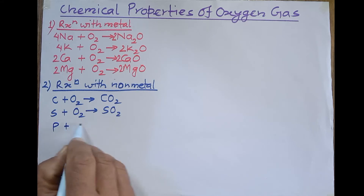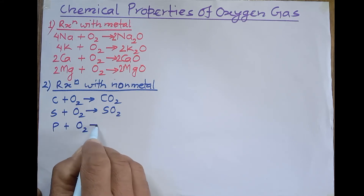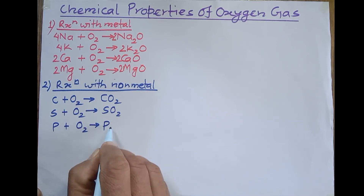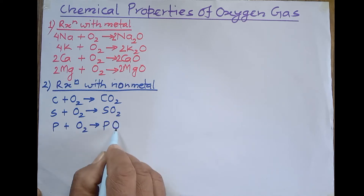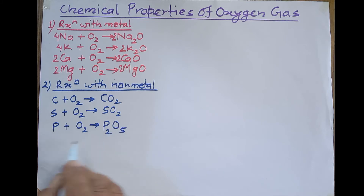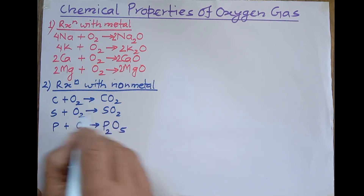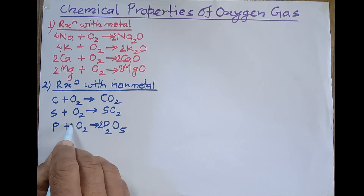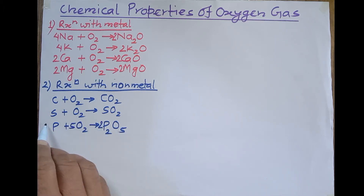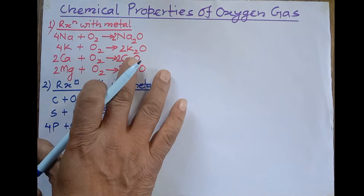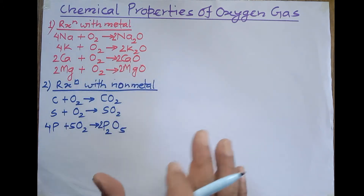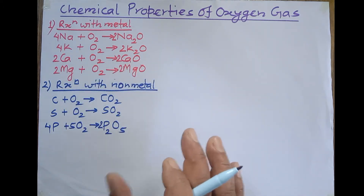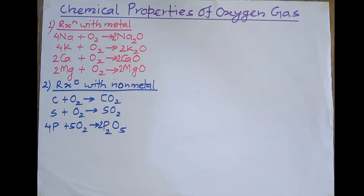Another example: phosphorus burns in oxygen to form phosphorus pentoxide (P₂O₅). The valency of oxygen is 2 and phosphorus is 5, so we exchange these values to balance. To fully balance: phosphorus coefficient is 4 and oxygen coefficient is 5, giving 10 oxygen atoms on each side. This is the reaction with non-metals, another chemical property of oxygen.